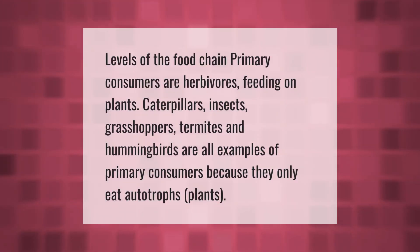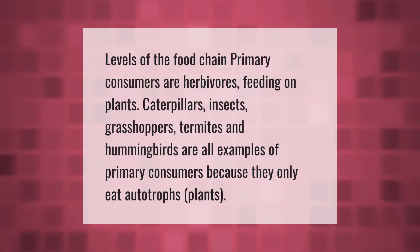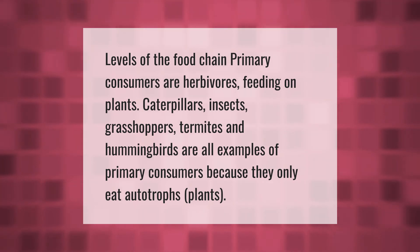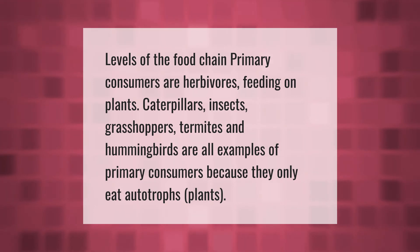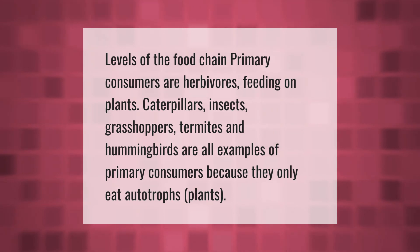At the primary consumer level of the food chain, primary consumers are herbivores feeding on plants. Caterpillars, insects, grasshoppers, termites, and hummingbirds are all examples of primary consumers because they only eat autotrophs — plants.